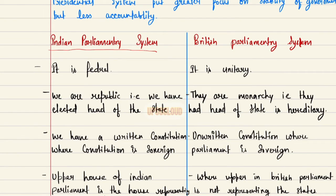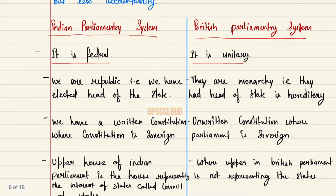Now let's see Indian parliamentary system versus British parliamentary system. In India, we are a republic — we have an elected head of state. In the British parliamentary system, it is a monarchy — the head of state is hereditary. India has a written constitution where the constitution is sovereign; in Britain there is an unwritten constitution where parliament is sovereign. The upper house of Indian parliament represents the interests of the states, called the Council of States, whereas the upper house in the British parliament does not represent the states.